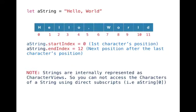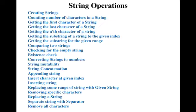Basically, the string is stored in character views and the index starts from 0 to n minus 1. We can get the starting index by using startIndex. Similarly, we can get the end index by using endIndex, but there is a difference: startIndex always points to the 0th position, and endIndex gives you one position after the last — for example, with 11 characters, endIndex gives you 12. We can perform different operations on strings; let's see them programmatically.